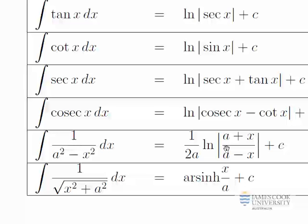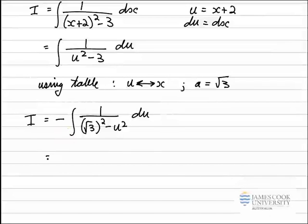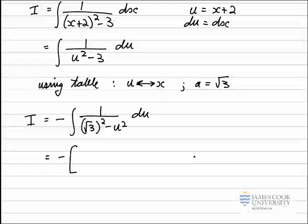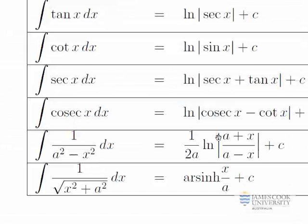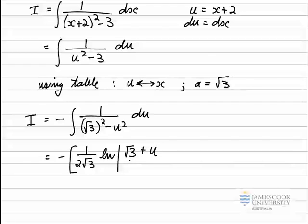So now this is in the same form. I translate the solution from the table over onto my question, remembering that I'm replacing u with x, and any a I see is actually equal to the square root of 3, and I've got this negative out the front. So let's write that out. Looking at the standard table, the first term is 1 over 2a, so in my solution that is 1 divided by 2 root 3, and I have the log of modulus signs here: a plus x over a minus x. That gives me the log, with modulus signs: root 3 plus u divided by square root of 3 minus u.